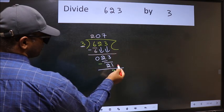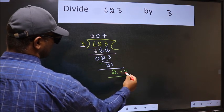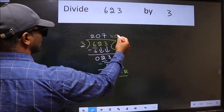No more numbers to bring down, so we stop here. This is our remainder and this is our quotient.